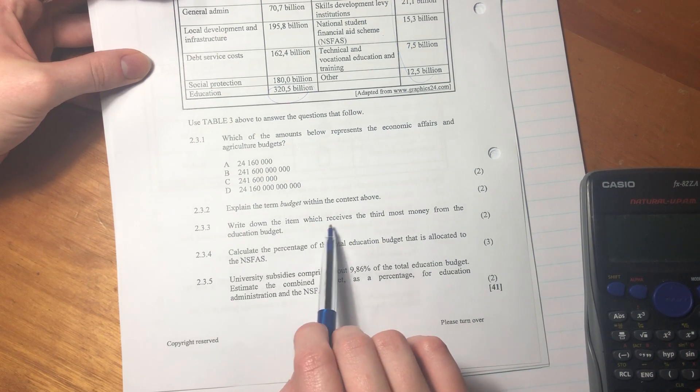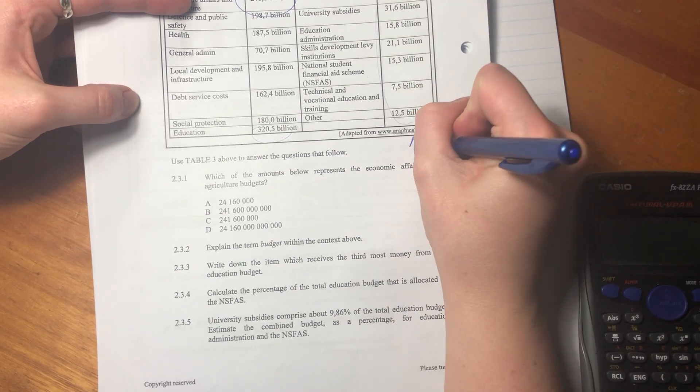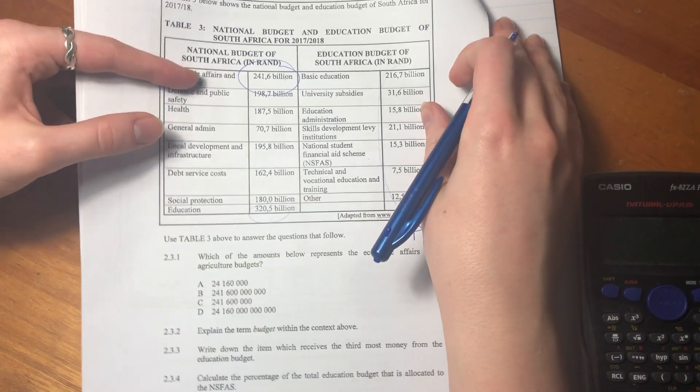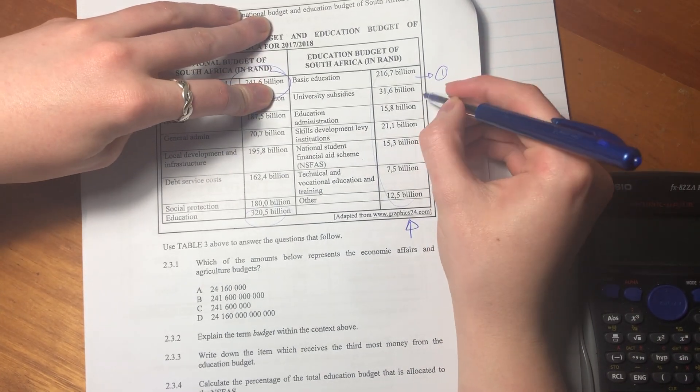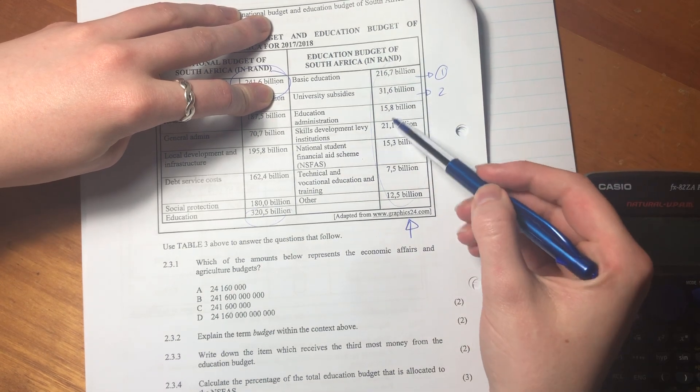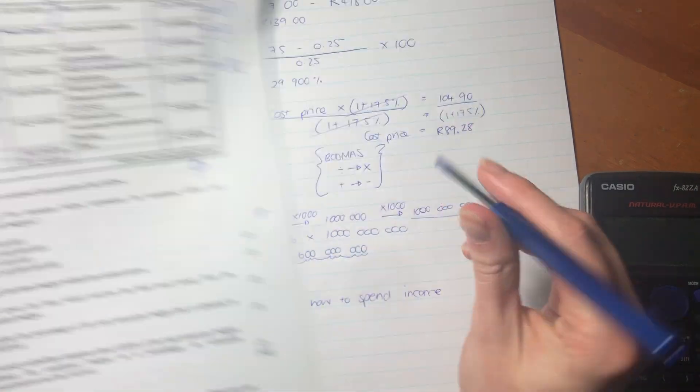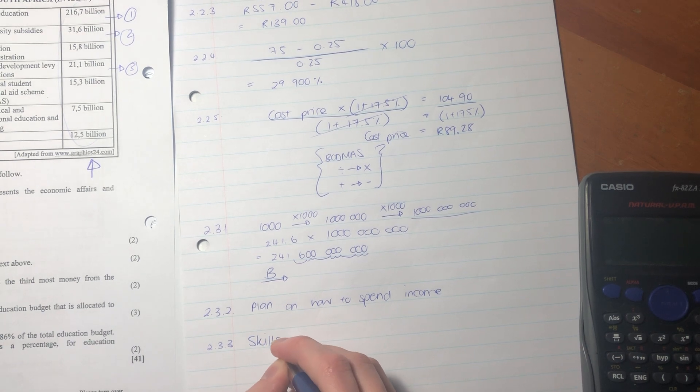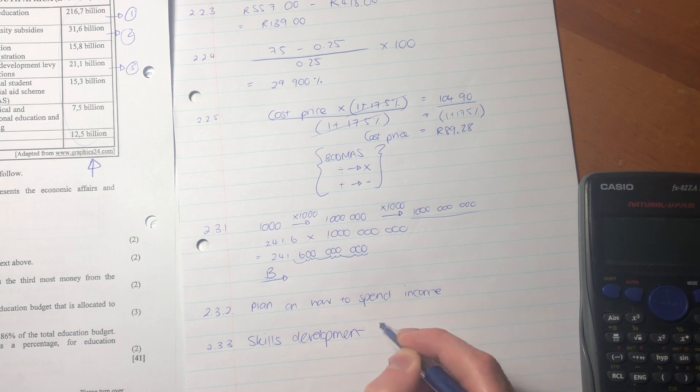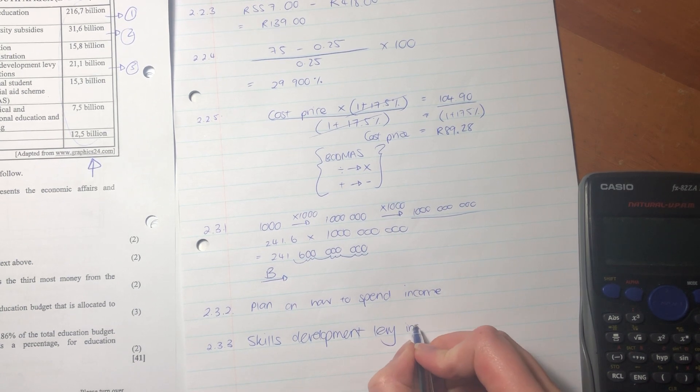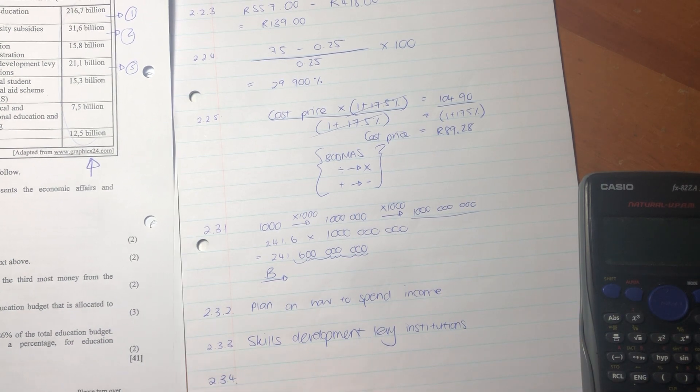So it says write down the item which receives the third most money from the education budget. So we're chilling here in this column, and we need to see which one is the third highest. So the highest is basic education, that's one. Second is university. Third would be skills development levy institutions. So our third most expensive is skills development levy institutions.